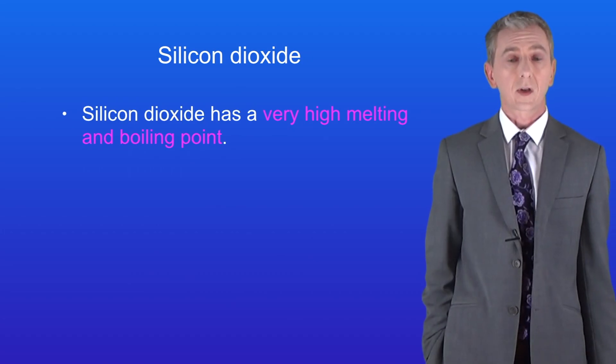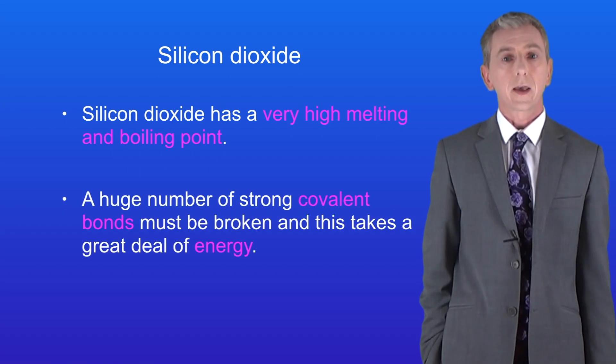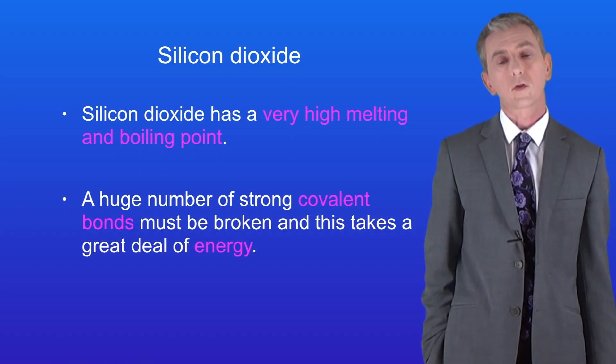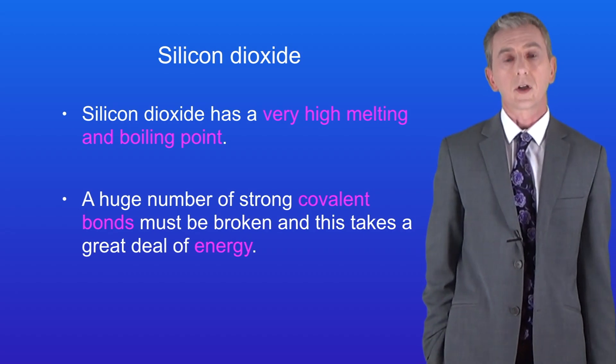So the key fact about silicon dioxide is that it has a very high melting and boiling point. Again that's because of the huge number of strong covalent bonds that must be broken and this takes a great deal of energy.